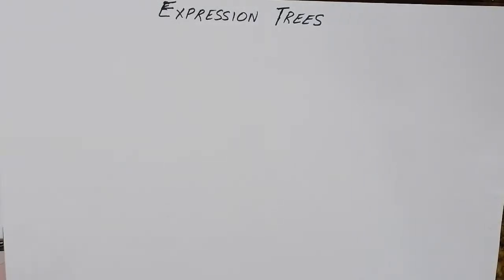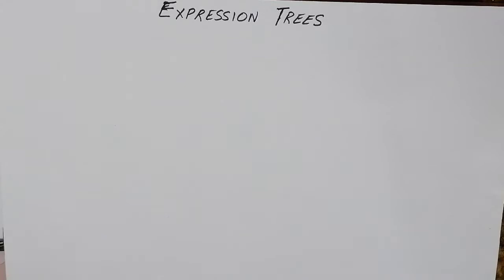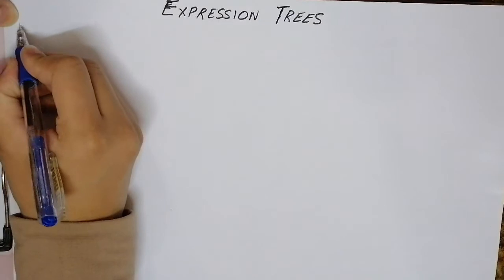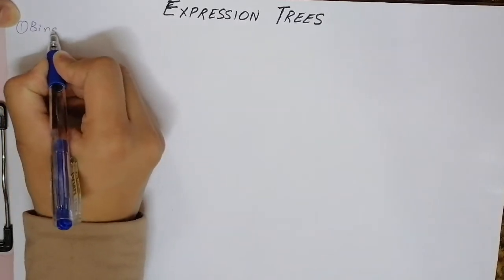The topic we are going to cover in this lecture is expression trees. Expression trees are a kind of binary tree having at max two children and minimum zero children at any particular node. Expression trees are basically a kind of binary tree with some specialized features that make them different from a regular binary tree, which we will discuss in a few minutes.